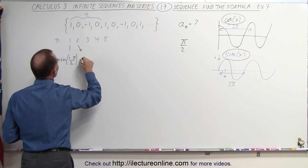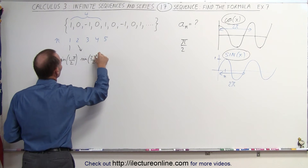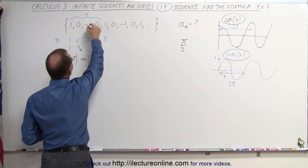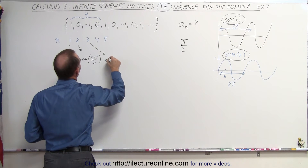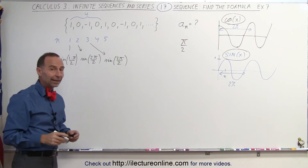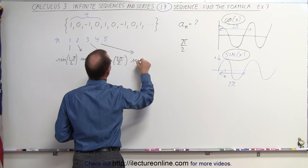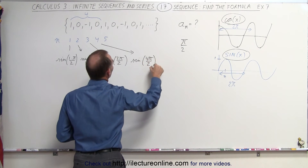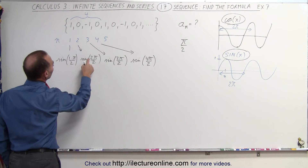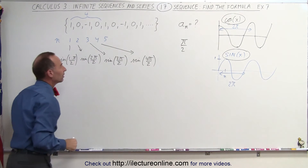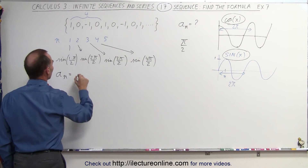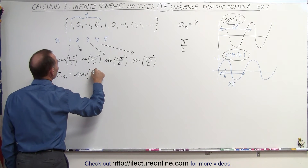The second value can be expressed as the sine of 2π over 2. Because 2 divided by 2 is 1, 1 times π is π, and the sine of π is 0 — which is this value. The third value, negative 1, can be expressed as the sine of 3π over 2, which is 270 degrees, giving us negative 1. The fourth value can be expressed as the sine of 4π over 2; sine of 2π is 0. So it's in sync: n equals 1, 2, 3, 4. Using the sine function, we can say that a sub n is equal to the sine of n times π over 2.